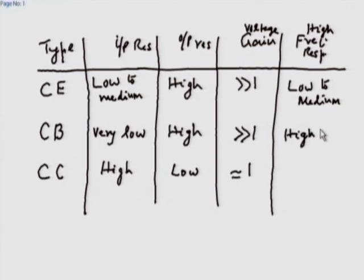If you build a discrete amplifier, a common base amplifier can give you quite high frequency response, definitely in the megahertz region. A common collector amplifier also has high frequency response. So we see immediately a case for cascading different stages. The basic philosophy which we follow in a multistage amplifier is to bring in the advantages of different stages and choose and order them in such a way that you finally minimize the disadvantages and cash in on the advantages.